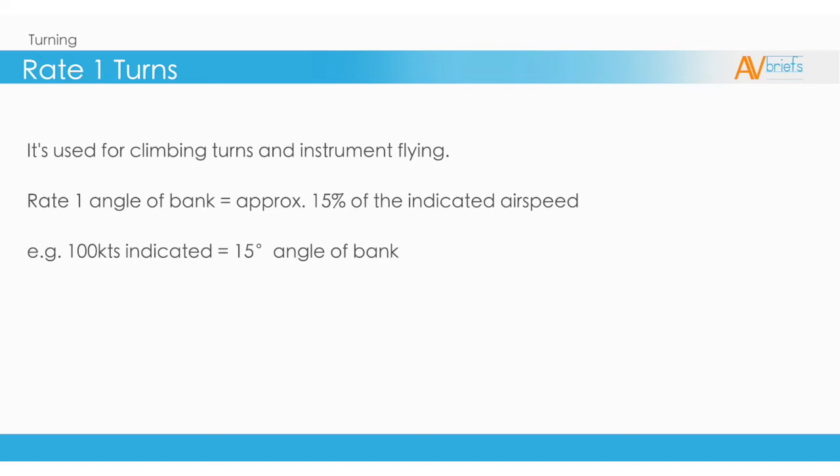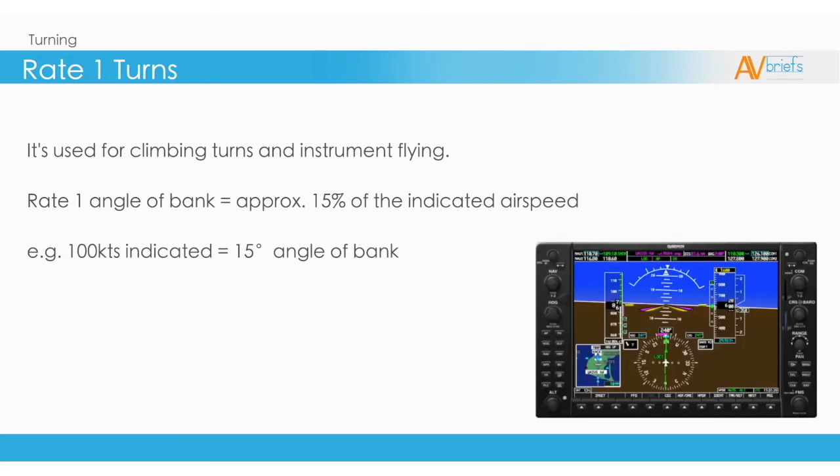Depending on the type of instruments you use, the Rate 1 turn will be depicted differently. For a newer glass-type instrument panel, the Rate 1 turn will be indicated by something similar to the Garmin 1000 shown here.